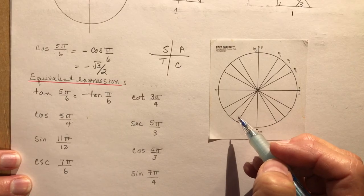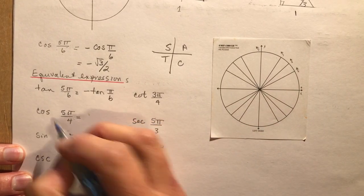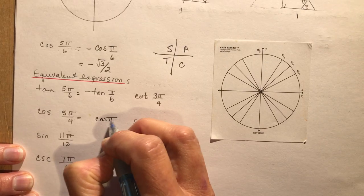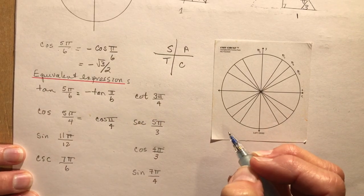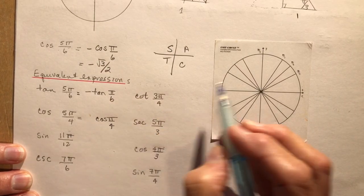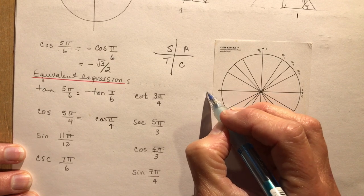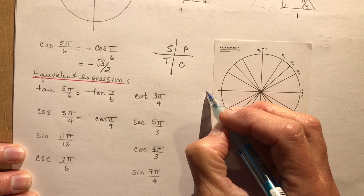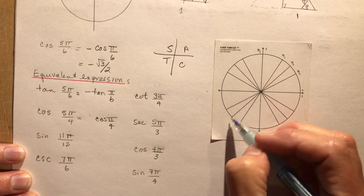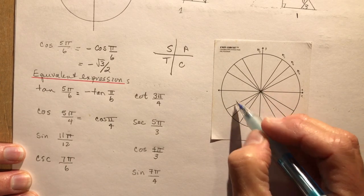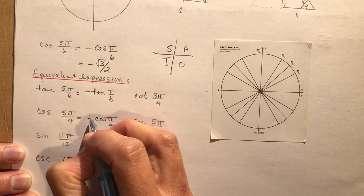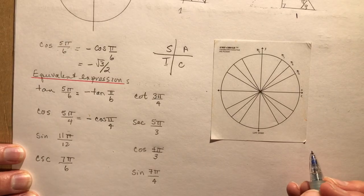For cos(5π/4): the related acute angle is π/4, and I just need to figure out whether it's positive or negative. Since 4π/4 equals π, 5π/4 lands in the third quadrant where only tangent is positive. So this must be the negative cos(π/4).